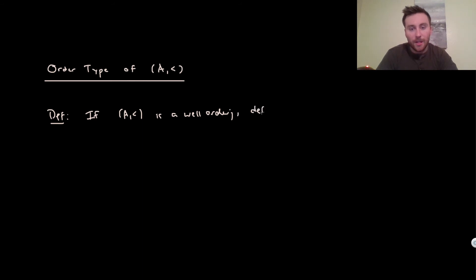what we're going to define is the order type, and the way it's denoted is something like type(A,<). We want to emphasize that it's the well-ordering that's given by less than, right? You can have different well-orderings on the same set, so it's important that we're specifying the ordering.